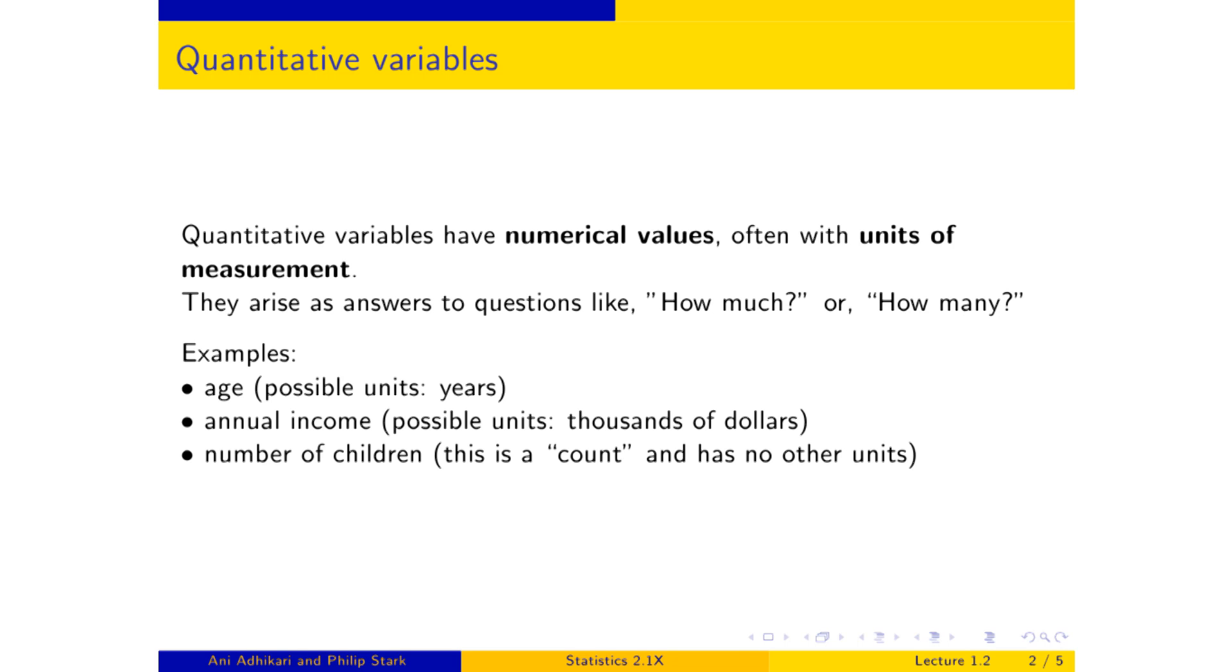For example, age, how many years. Annual income. How much money do you make? In the United States, a natural unit of measurement is thousands of dollars. A number of children. Now this one's interesting. This one has no units of measurement like centimeters or degrees Celsius or dollars. It's a count.